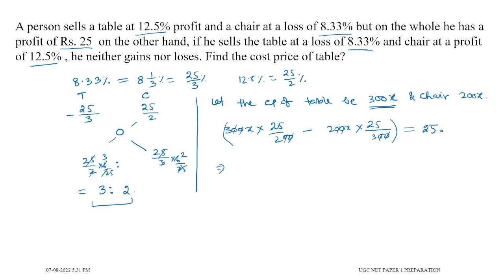25 is not common at first, but then 25 is common and cancels. So we have: 2x minus 2x by 3 is equal to 25, and the 25s cancel, leaving us with 1.